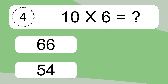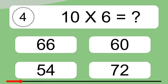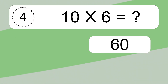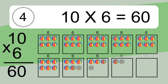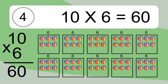10 times 6 equals what? 10 times 6 equals 60. We have 10 boxes, and each box has 6 colorful balls inside. If you count all the balls in all the boxes together, you will have 10 times 6 balls. This equals 60 balls.